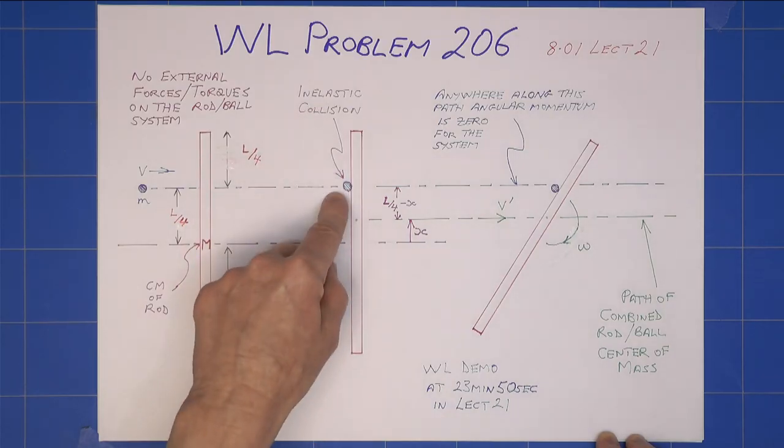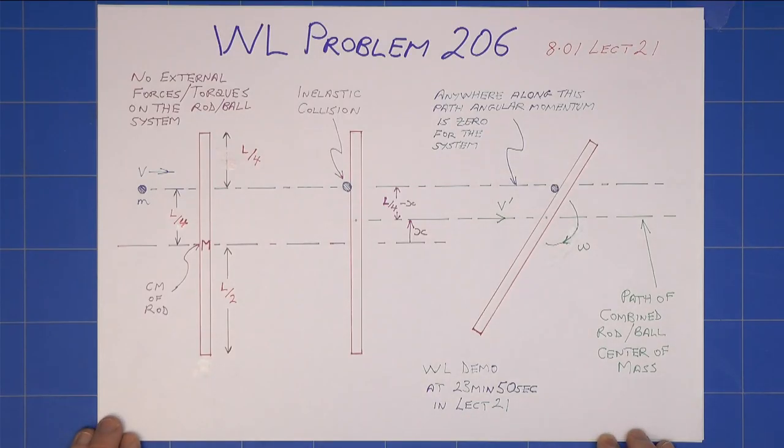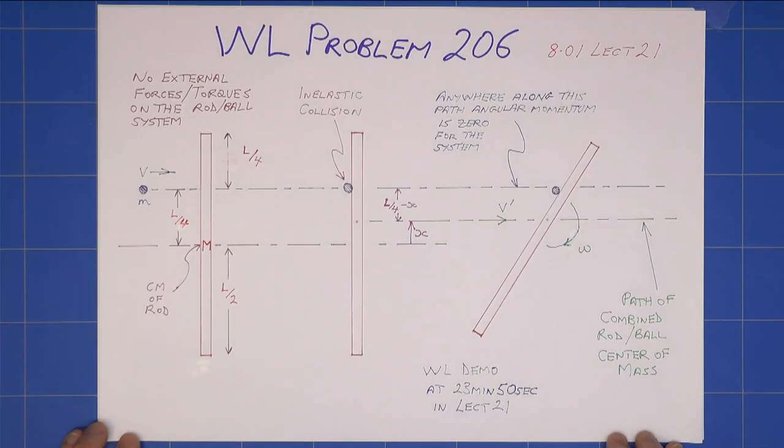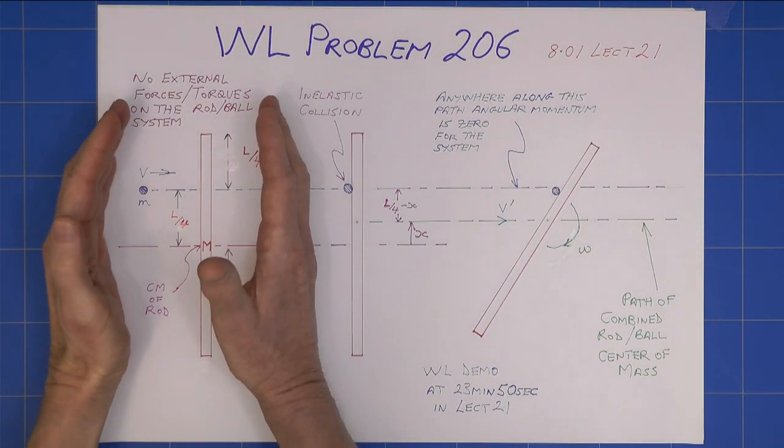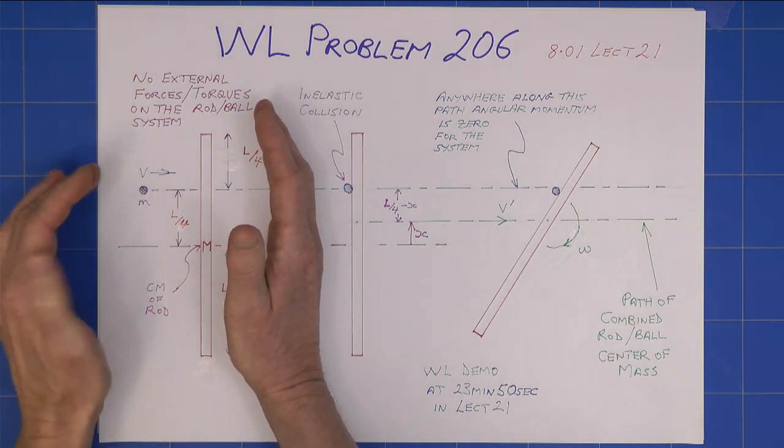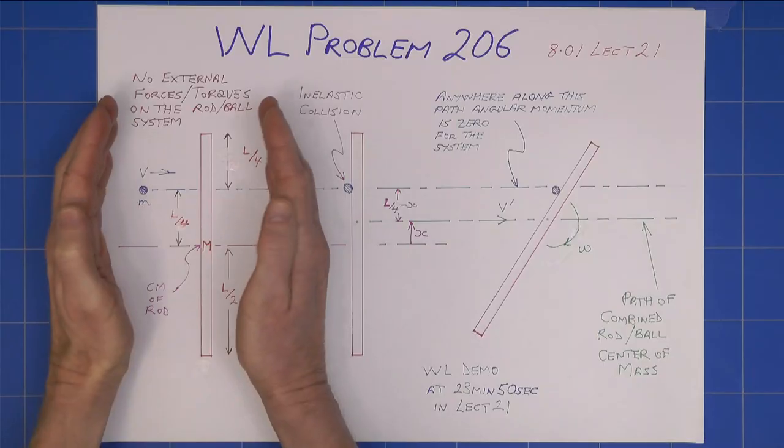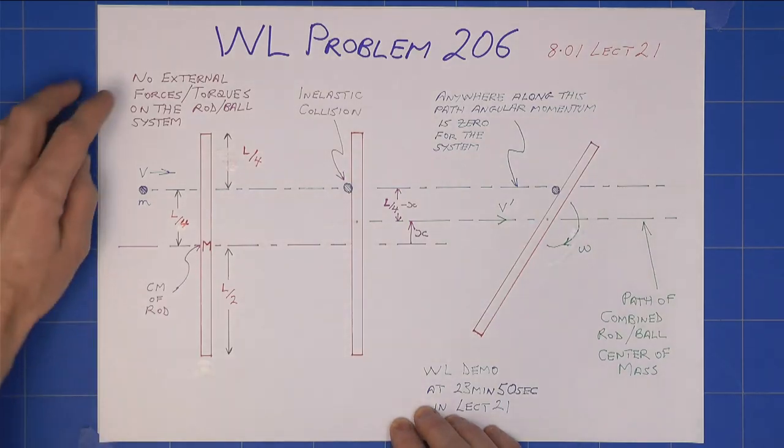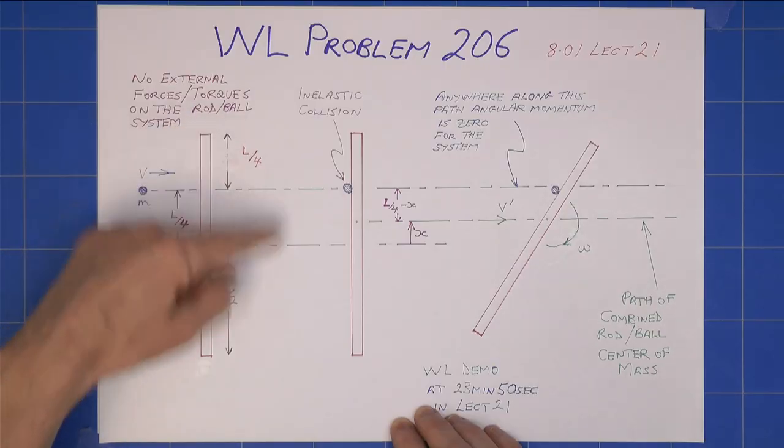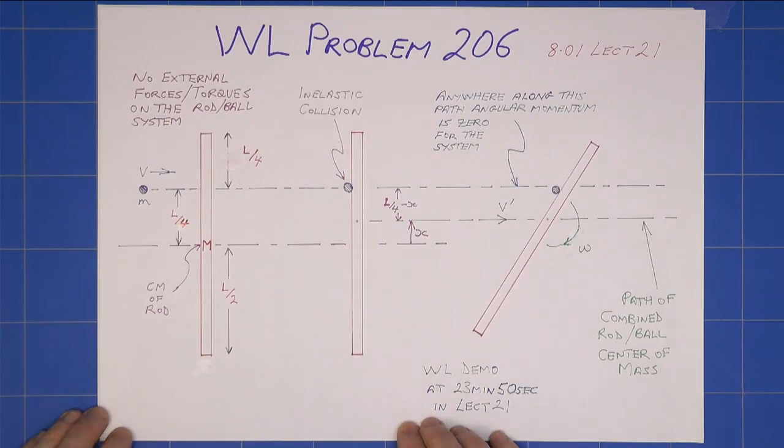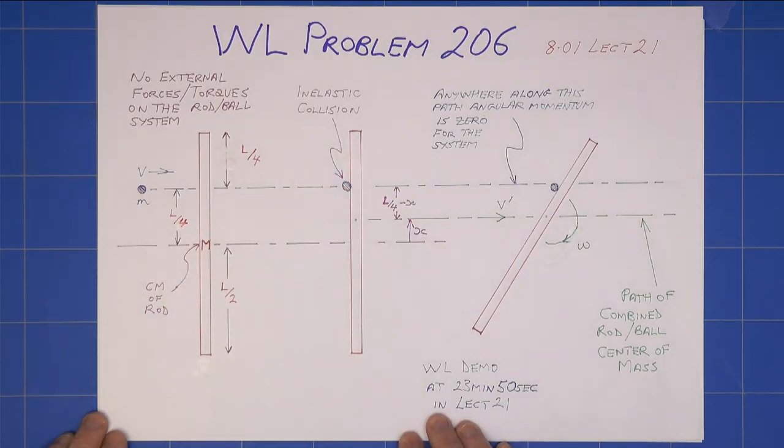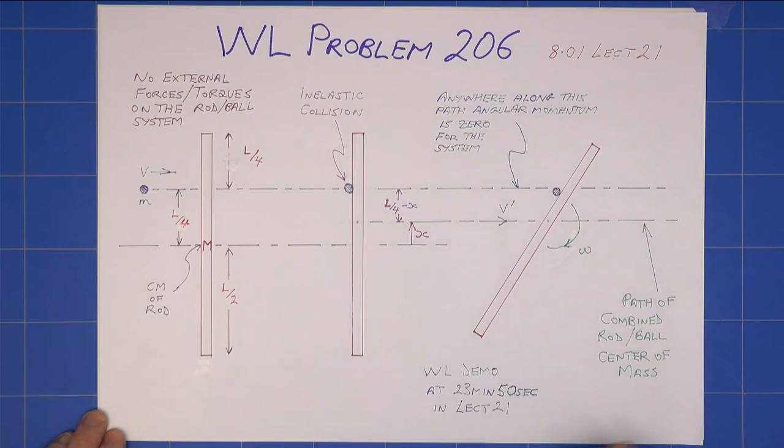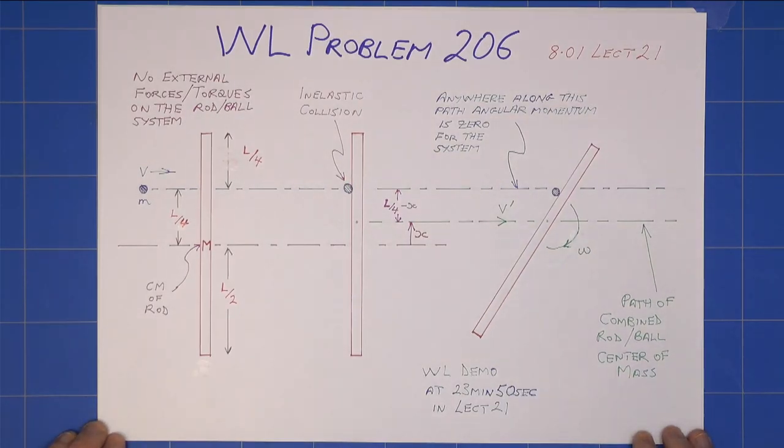And then they move as one entity. And it is an inelastic collision, so energy will not be conserved for this system. If we consider the system of the clay ball and the rod, the forces between the rod and the clay ball are all internal. So there are no external forces or torques on the system. So we can say, even though energy is not conserved, linear momentum will be conserved and angular momentum will be conserved.